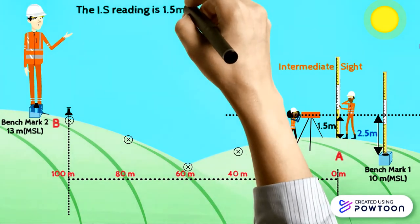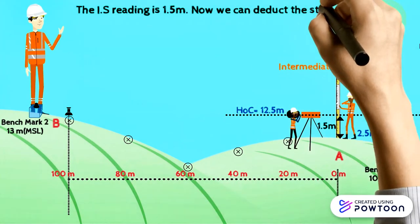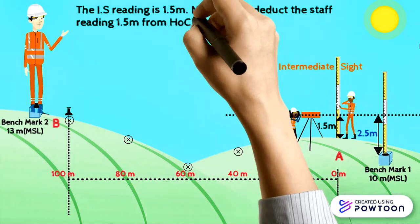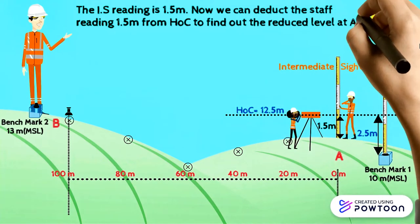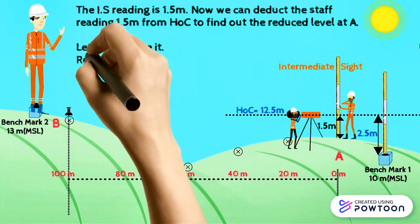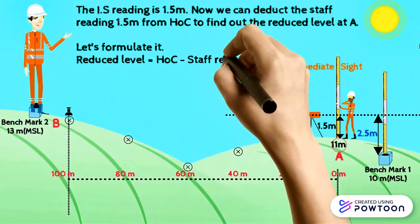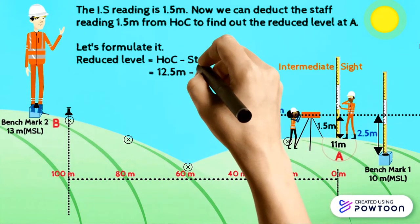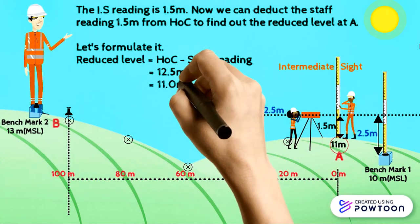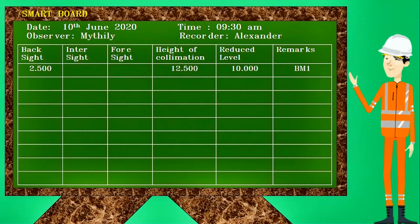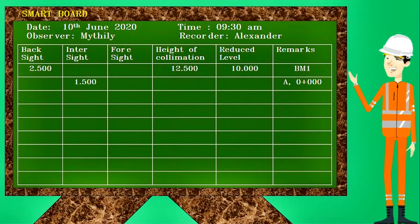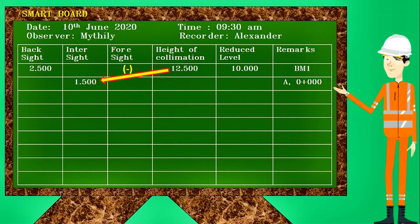The intermediate sight reading to point A is 1.5 meters. We can deduct this staff reading of 1.5 meters from the height of collimation to find the reduced level at A. The formula is: Reduced Level = Height of Collimation − staff reading = 12.5 − 1.5 = 11 meters. Record the intermediate sight value in the intersight column, then deduct 1.5 meters from the height of collimation value 12.5 meters to get the reduced level of point A.